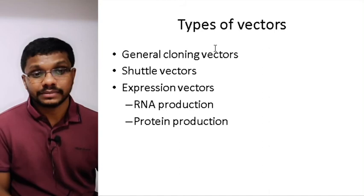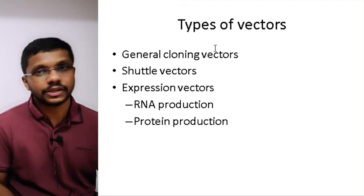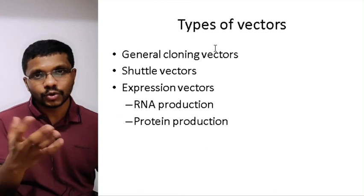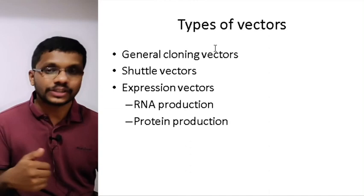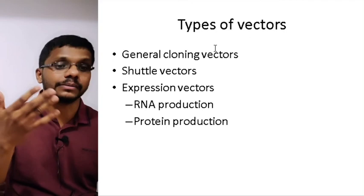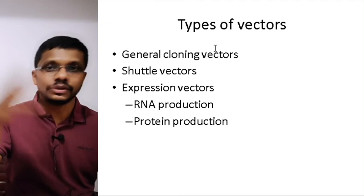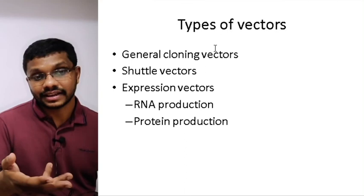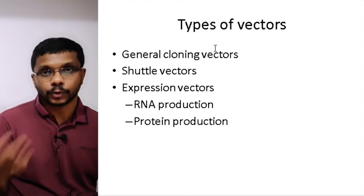We also have expression vectors, which can be of two different types: RNA production vectors or protein production vectors. In RNA production vectors, an inserted DNA is transcribed into RNA, so the cells produce RNA corresponding to your DNA. In protein production vectors, the inserted DNA causes the corresponding protein to be produced by the bacteria. In following sessions, shuttle vectors and expression vectors will be discussed further, covering vectors used in yeast, plant cells, and animal cells.